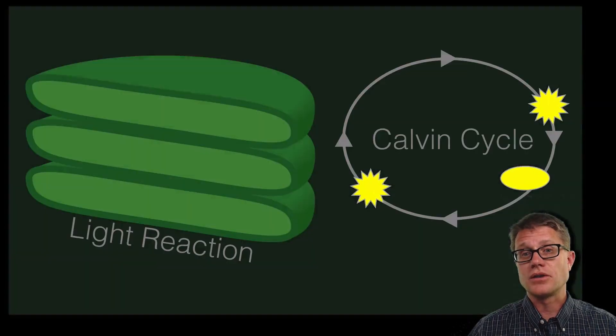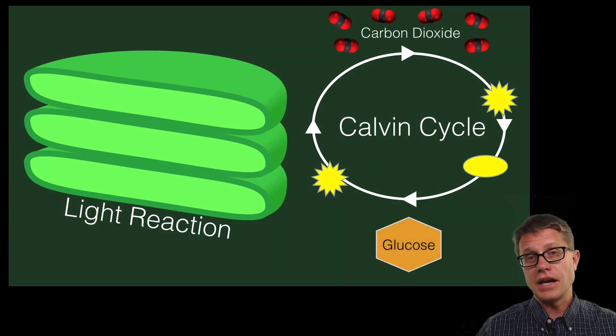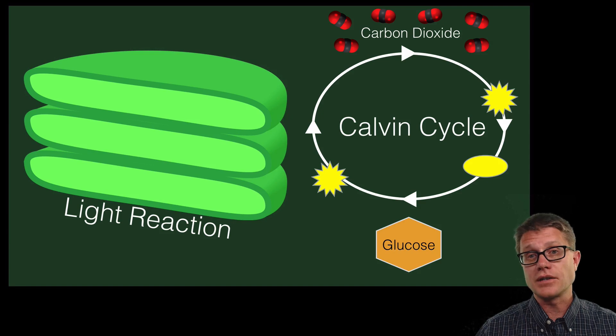Where is it going? It is going to the Calvin cycle. In the Calvin cycle we are taking that energy and adding it to carbon dioxide. We are also adding hydrogen. And we are making high energy molecules like glucose.